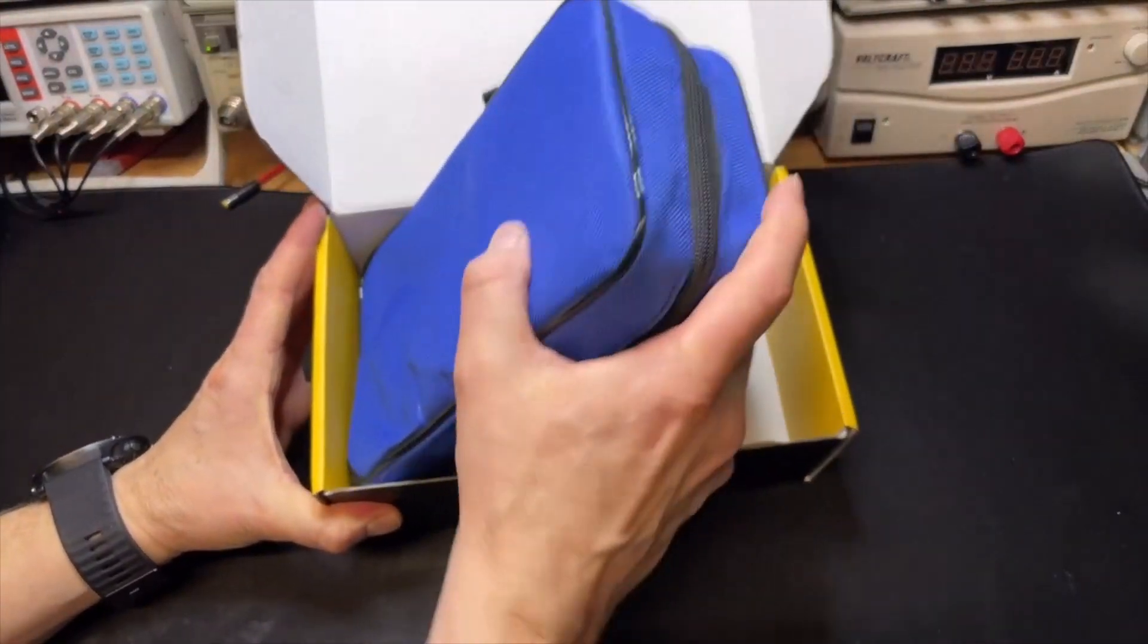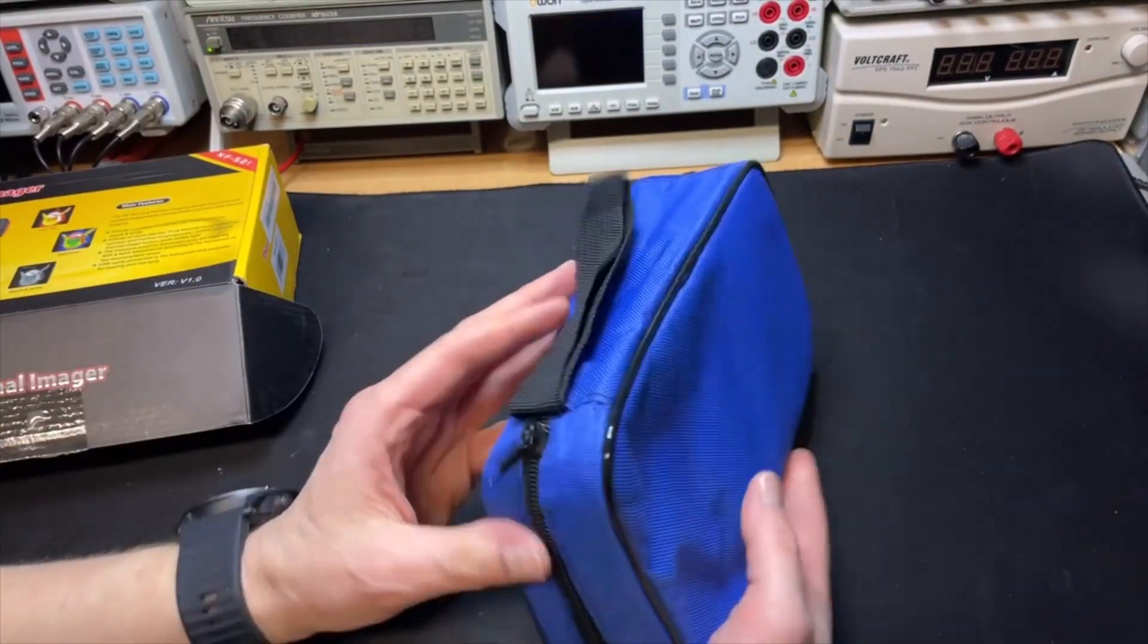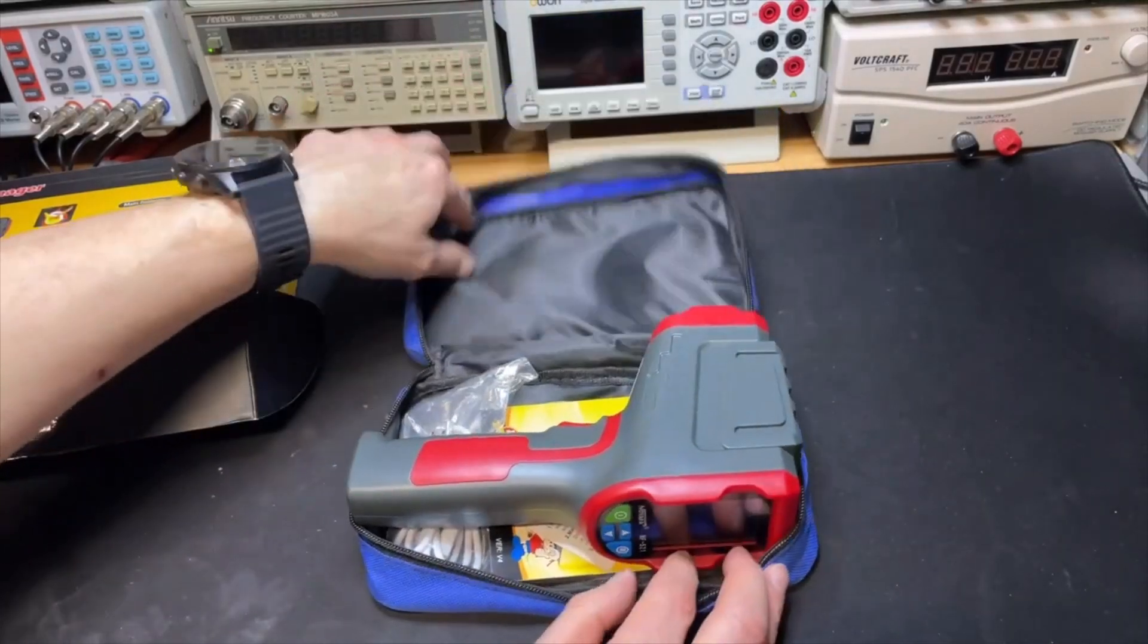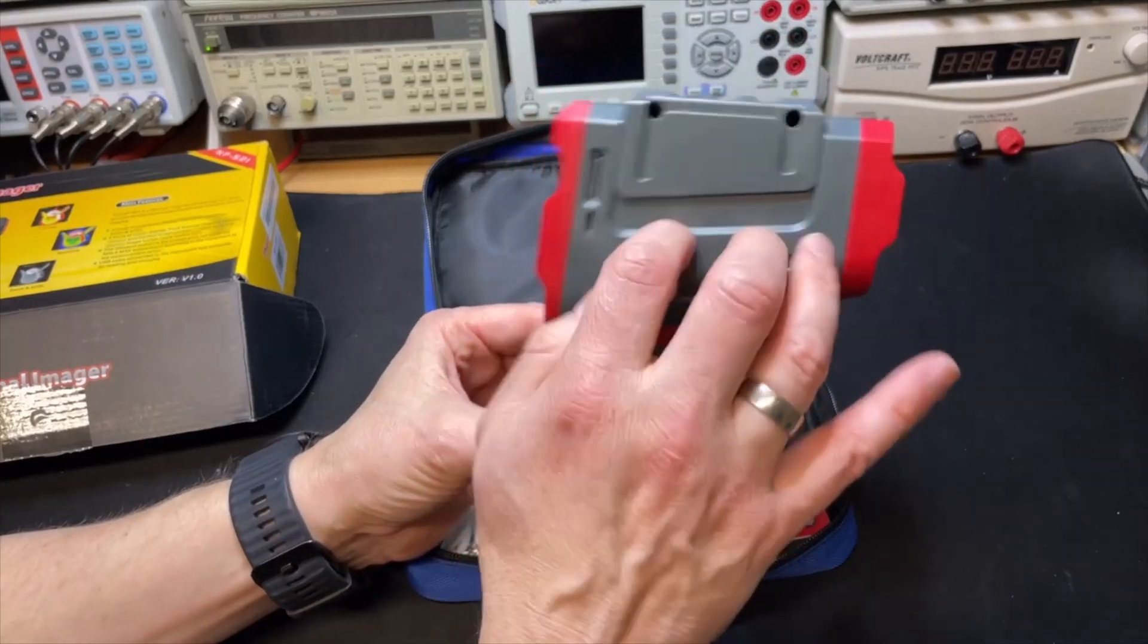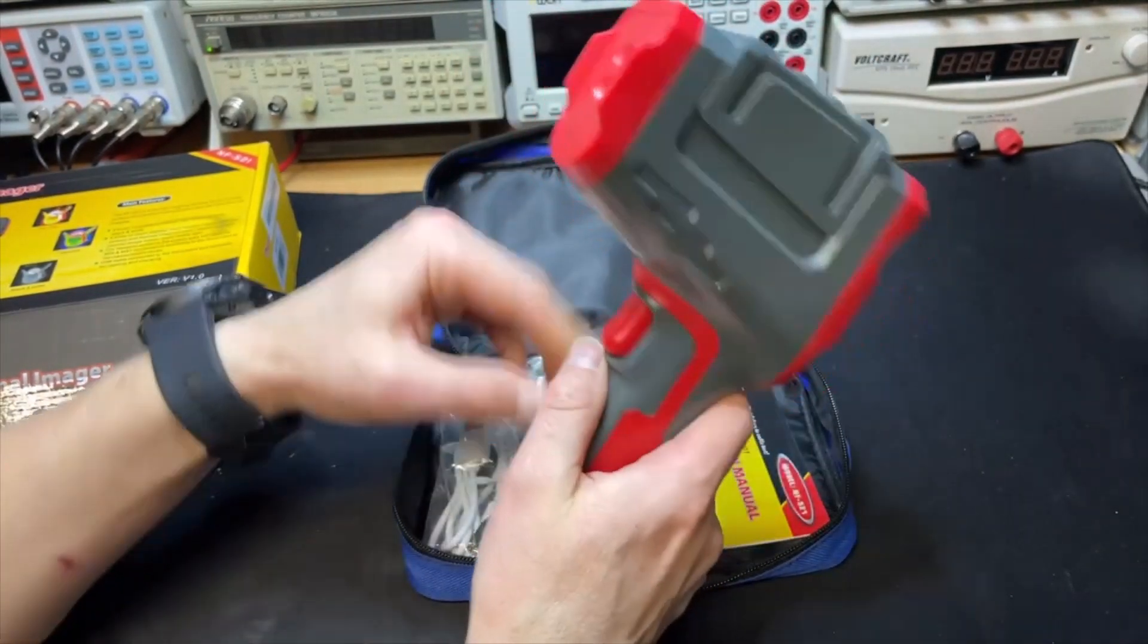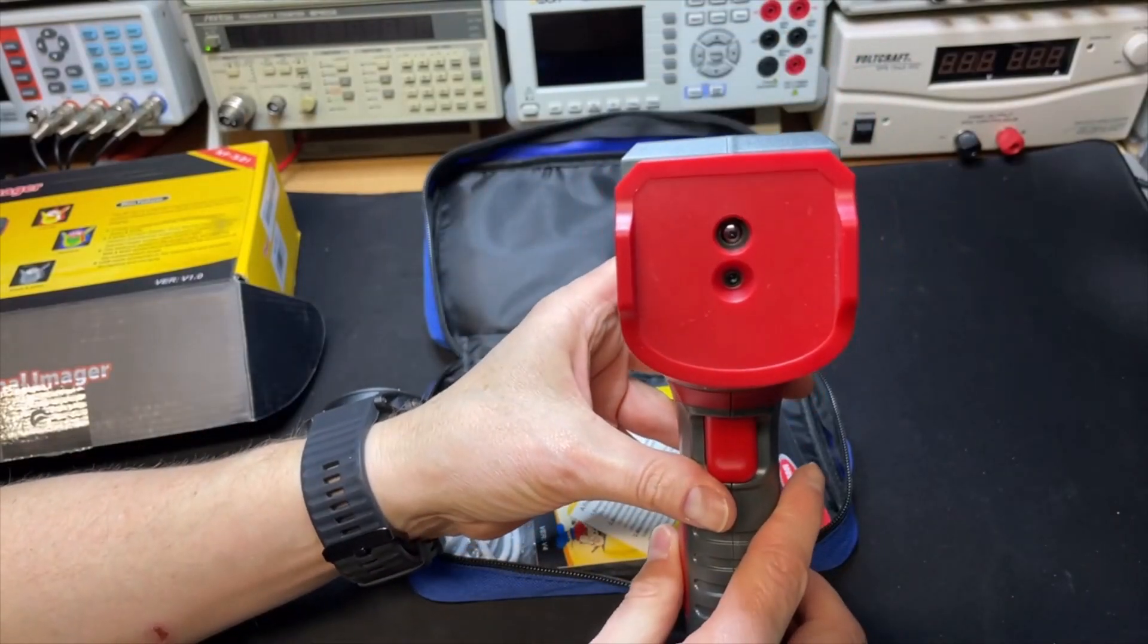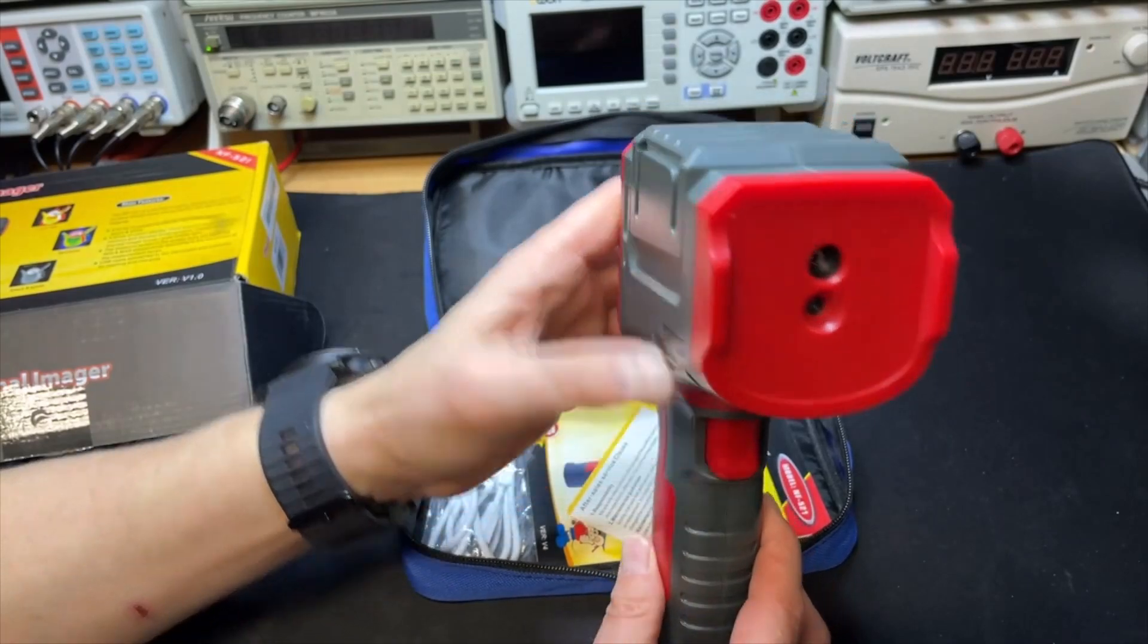Oh look at this, it even has a nice case, that is nice. Here it is, it's huge, look at this. It looks like it would be kind of rubbery but it is not, it is just plastic. Here you have the two sensors - one is the thermo and one is the visual.